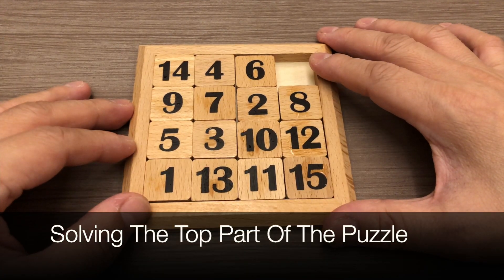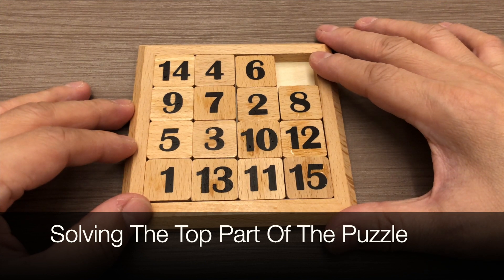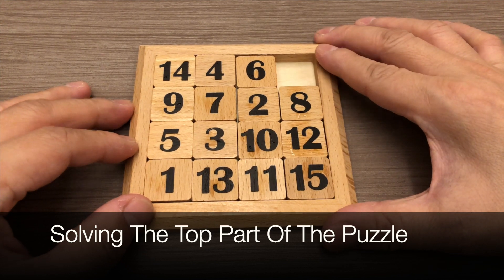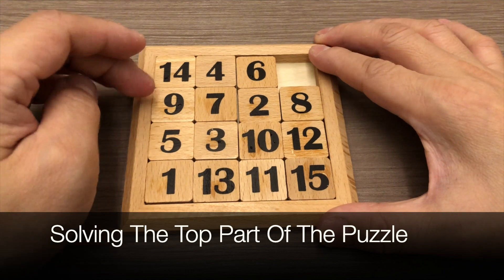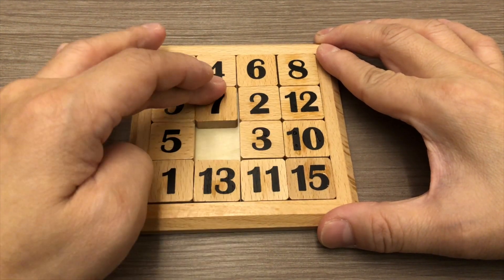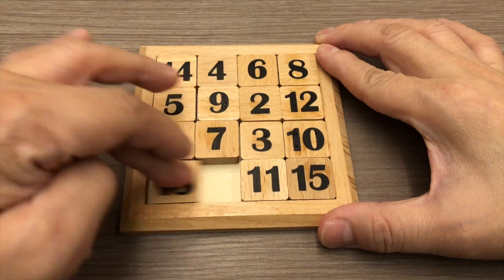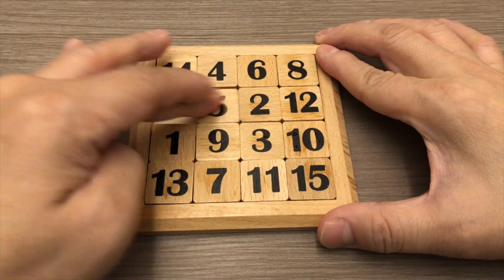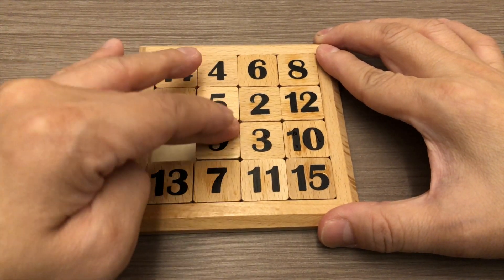Now the puzzle has been scrambled and we will first solve the top part of the puzzle. We'll start with putting 1 and 2 at the right location. We can simply do it by sliding the numbers to the location like so.